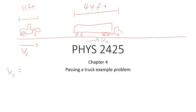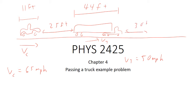V sub C is 65 miles per hour, and V sub T, the velocity of the truck, is 50 miles per hour. When the car is a distance of 25 feet behind the truck, it pulls over to the left to pass the truck. Then when the car is a distance of 30 feet in front of the truck, it pulls back in. So what I want to know is: how long does this take, and how far down the road does the car move while doing this pass?